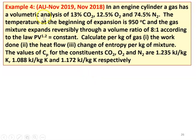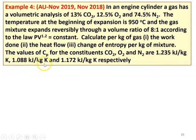Example number 4. This is again from November 2019 and November 2018. In an engine cylinder, the gas has a volumetric analysis of 13% CO2, 12.5% O2, and 74.5% N2. The temperature at the beginning of expansion is 950 degrees Celsius. The gas mixture expands reversibly through a volume ratio of 8:1 according to the law PV to the power 1.2 equals constant. Calculate per kilogram of the gas: the work done, the heat flow, and the change in entropy per kg of the mixture. The values of Cp for CO2, O2, and N2 are 1.235, 1.0008, and 1.172 kilojoules per kilogram Kelvin respectively.